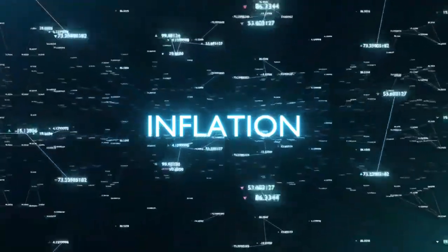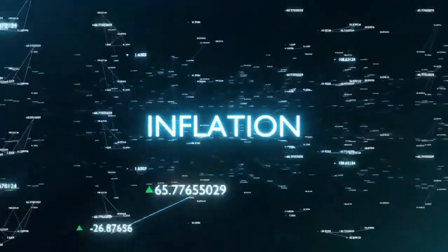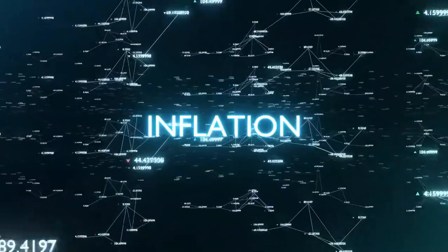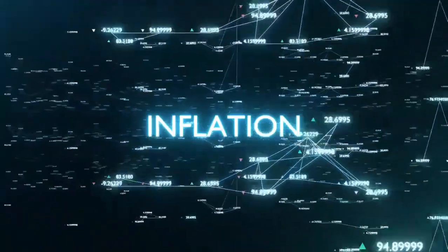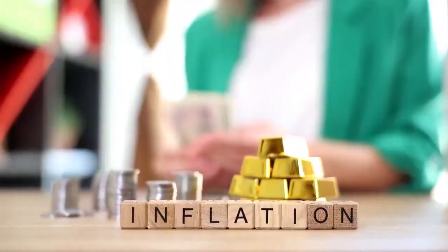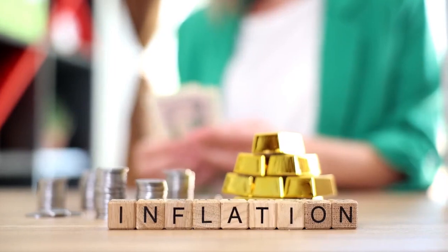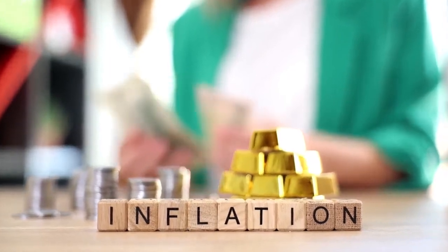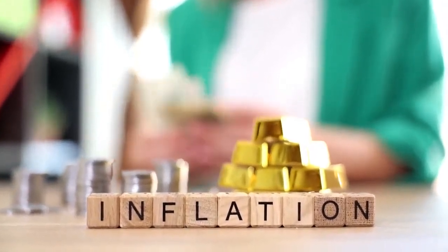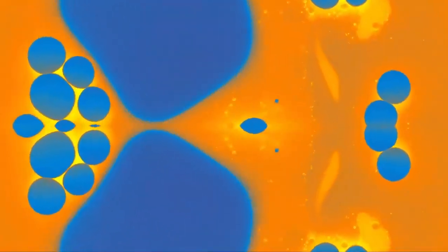At times, quantum fluctuations akin to those shaping the universe's structure cause certain areas where inflation ceases, resulting in a hot Big Bang. However, these regions are far fewer compared to those where inflation persists indefinitely. Notably, no two separate regions with Big Bangs will ever overlap because the expanding universe drives them apart.